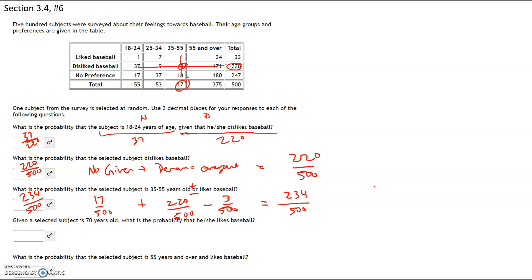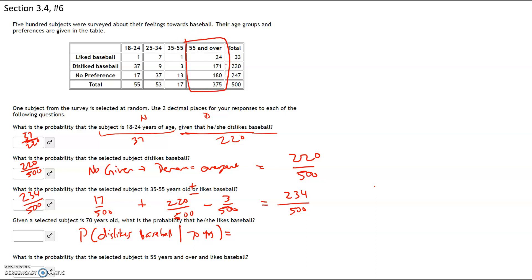We want to find the probability that he or she dislikes baseball given that they are 70 years old. If they're 70 years old, they fall in the 55 or older category. So we're looking for all the people who are 70 years old — they fall in the 55 and over category, which is a total of 375 people. Of those 375, we have 171 who dislike baseball. So our probability is going to be 171 out of 375.